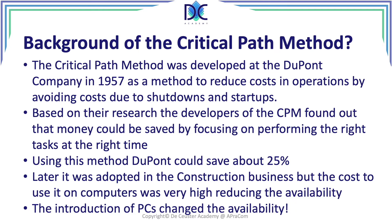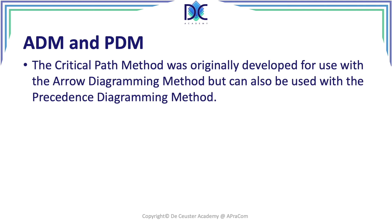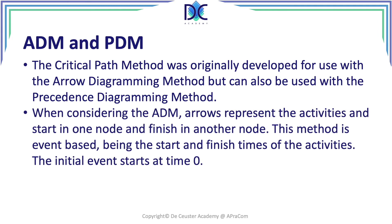The critical path method can use two scheduling approaches. Originally CPM was developed with the Arrow Diagramming Method (ADM), where arrows represent activities starting in one node and finishing in another. Those nodes act as milestones — a start milestone and a finish milestone for each activity. The Precedence Diagramming Method (PDM) also exists, and both methods were developed roughly in parallel, with practitioners having personal preferences for one or the other.